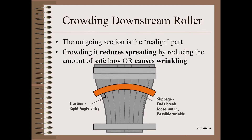Second, if you don't and the path length is too abrupt, you can wrinkle. As we learned in the Web 101 class, you can just as easily make wrinkles via poor spreader application, and this is just one of many ways.